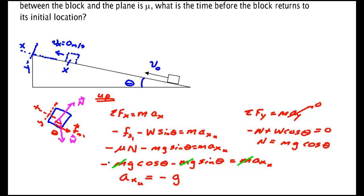is equal to minus g—oops, I lost a μ here on the previous line—minus g times μ cos θ plus sin θ. So that's the acceleration on the way up. Sorry about losing that coefficient of friction.